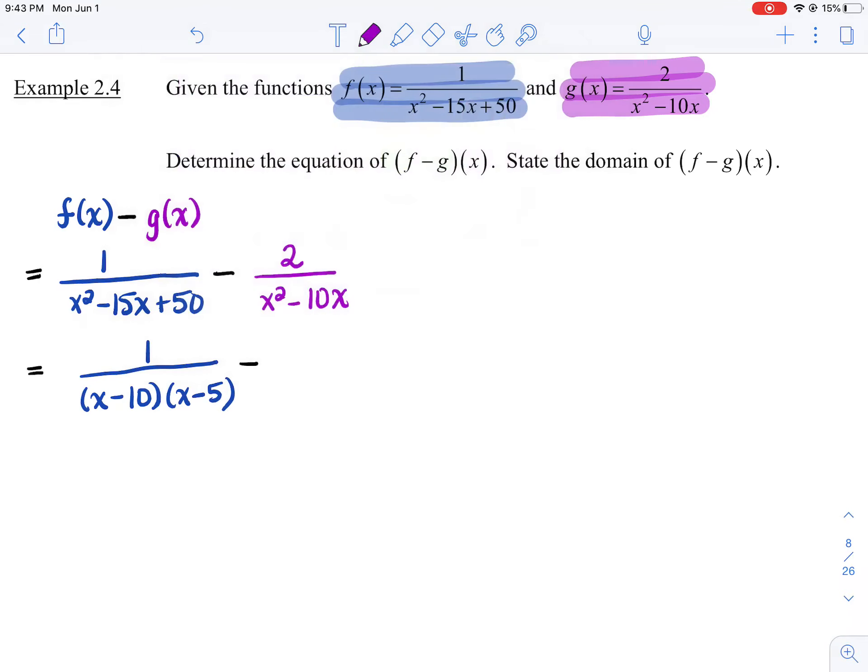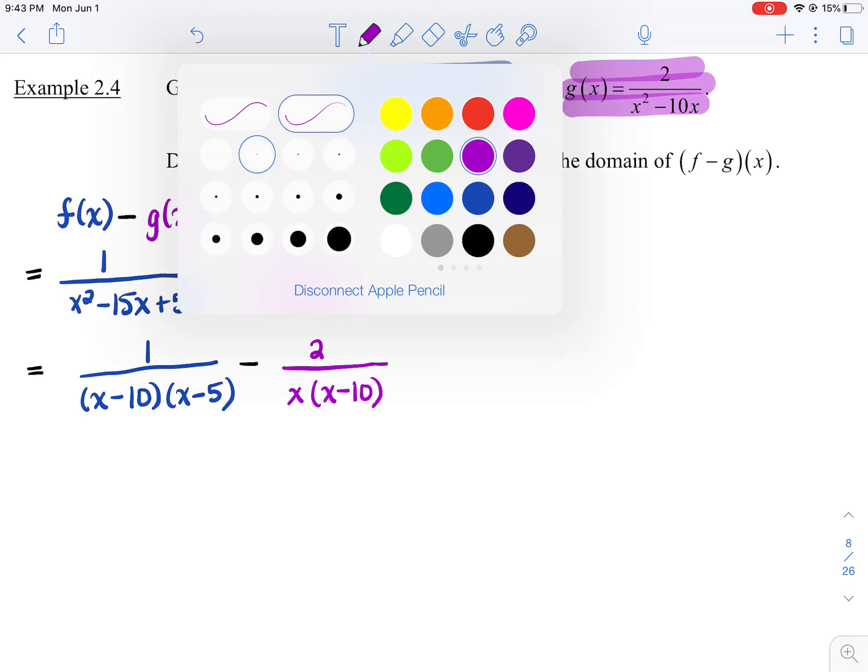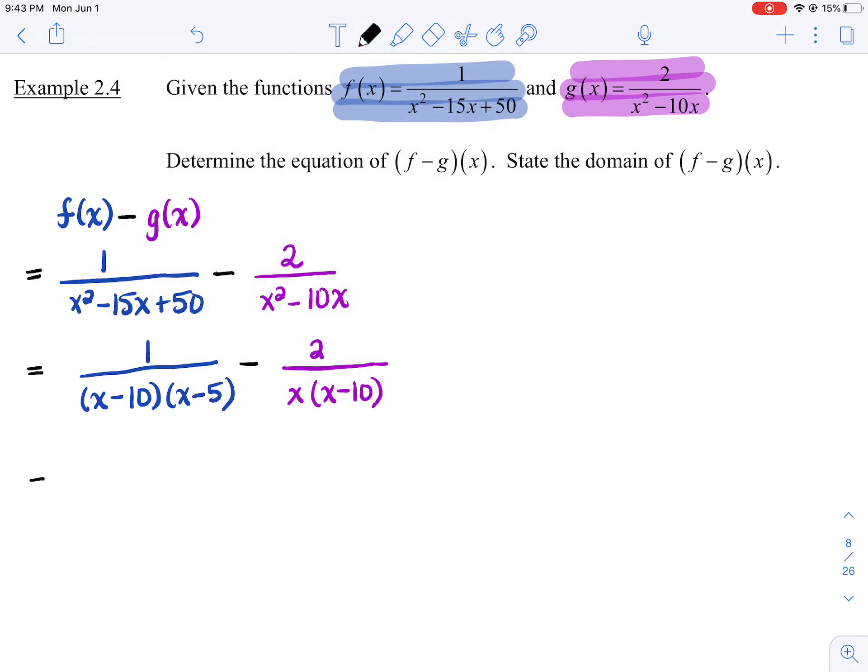Minus, in the second fraction, we can GCF the denominator, we can take out a 2. I meant x, not a 2. Take out an x from the denominator and you get x times x minus 10. All right, so here's where I'm going to get lazy, guys. I'm just going to use one color.